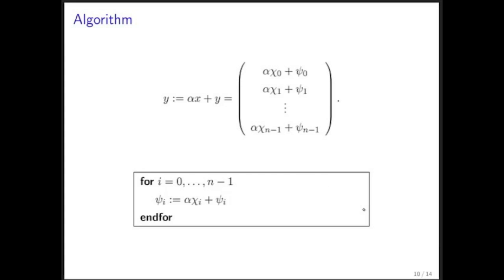If we now want to look at an algorithm for performing this operation, notice that the i-th component of y has to be updated by scaling the i-th component of x and adding it to the i-th component of y. So psi i becomes alpha times chi i plus psi i. And as usual, we need to put a loop around that so that this is done for all components from 0 to n minus 1.